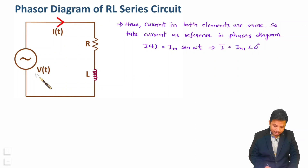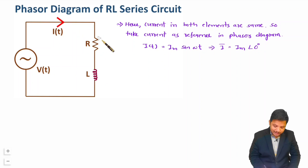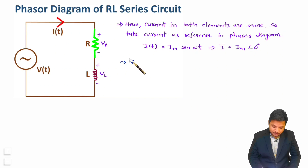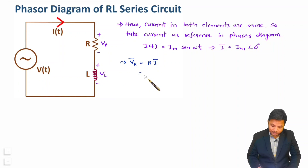Now we need to understand what happens in terms of voltage across R and L. Current is entering, so voltage across resistance is VR and voltage across inductor is VL. The voltage across the resistor in phasor form is VR = R × I, where phasor current I = Im∠0°.